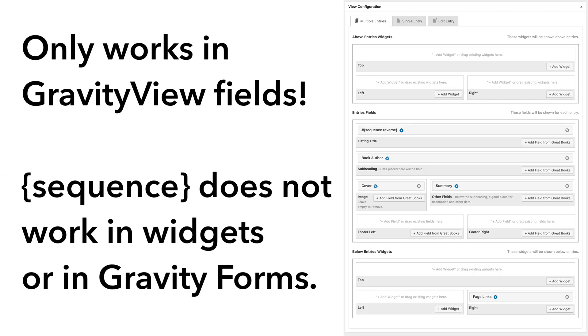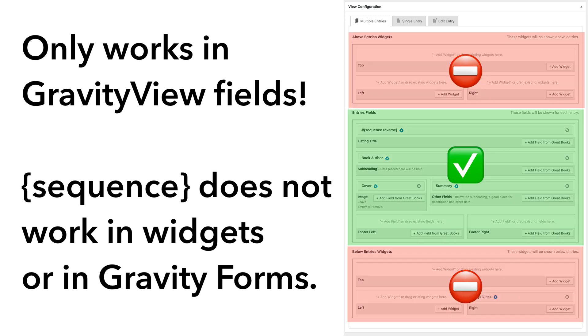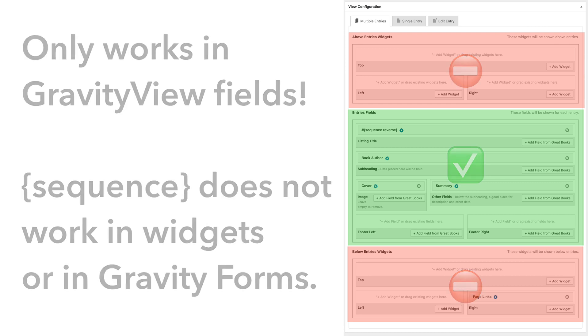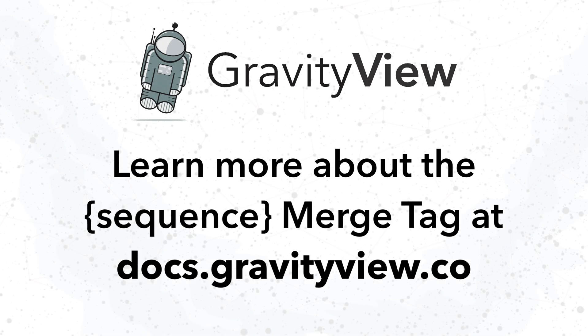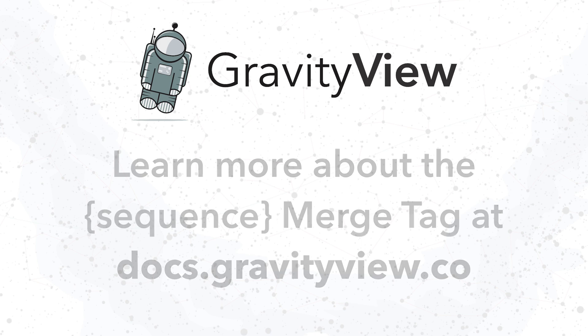One thing to note is that normally you can use merge tags throughout Gravity Forms, but the sequence merge tag will only work inside GravityView fields in a view. So that's the basics of using the sequence merge tag. To learn more, check out the GravityView docs site — we have a whole article written up on it. Thanks for your time.